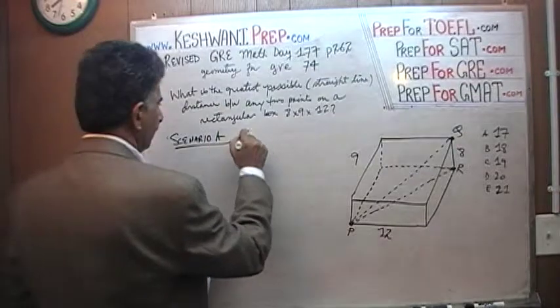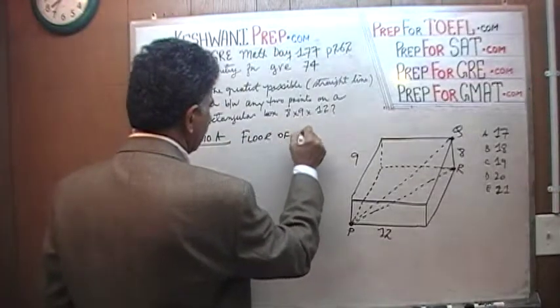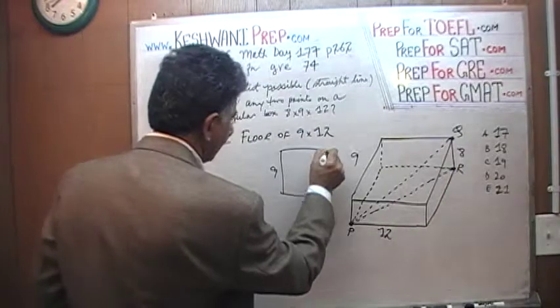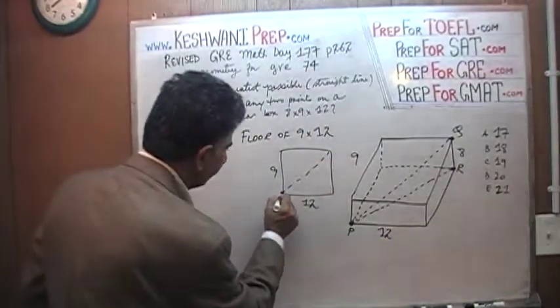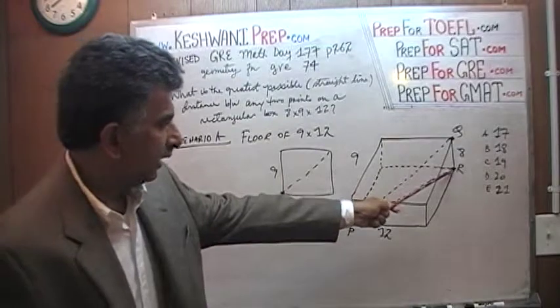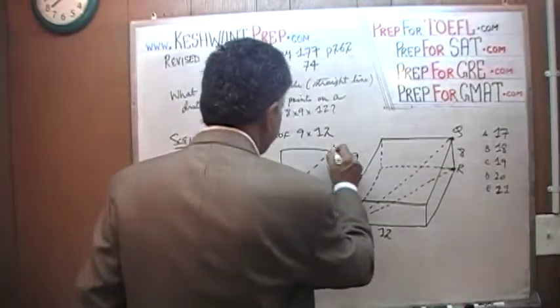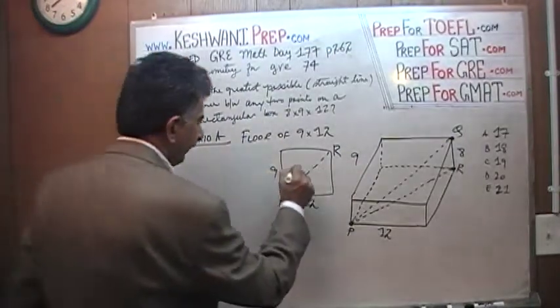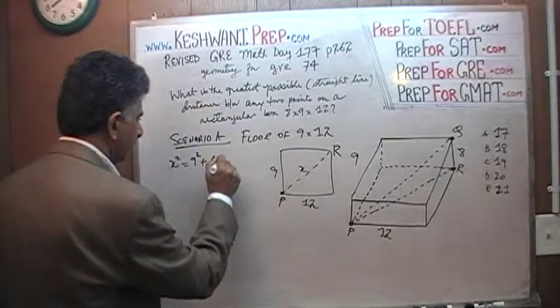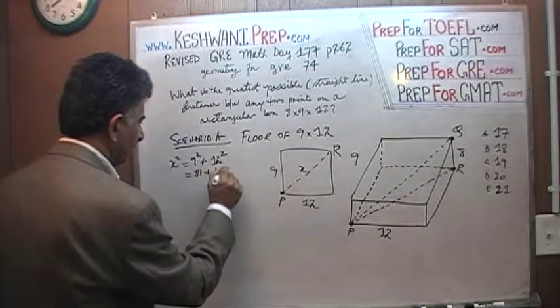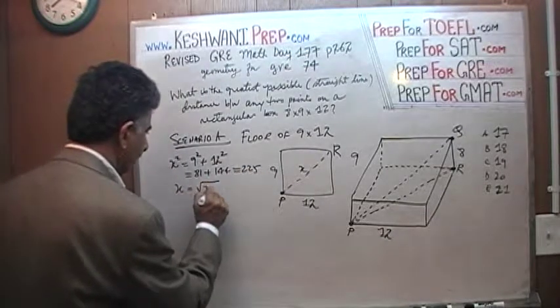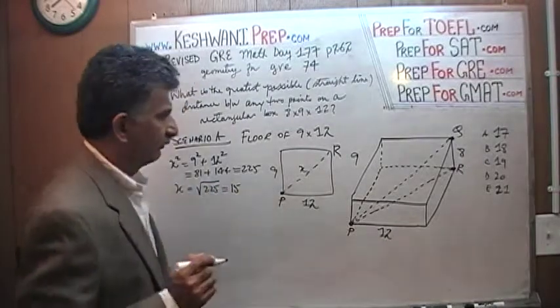Here's your rectangular box. The greatest possible distance is the same scenario as yesterday's, which are these two points P and Q. In order to find the distance from P to Q, just like yesterday in lesson 176, we have to first find the floor diagonal. For scenario A, floor of 9 by 12, X squared equals 9 squared plus 12 squared, which is 81 plus 144. That comes out to be 225, therefore X equals 15.